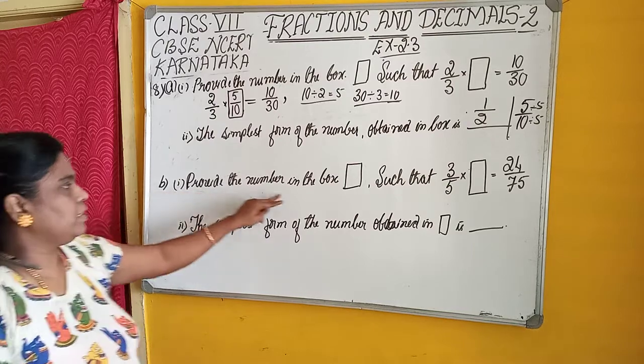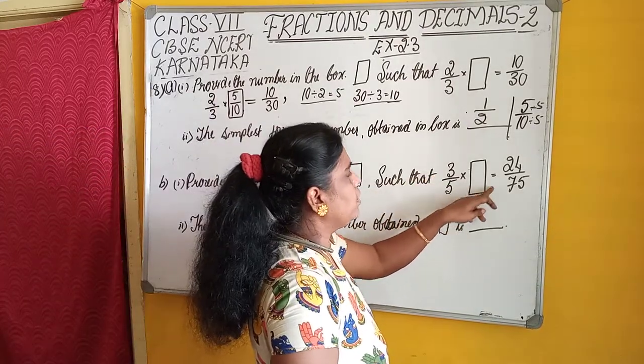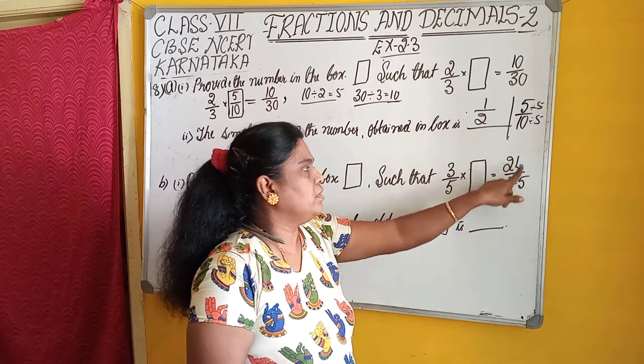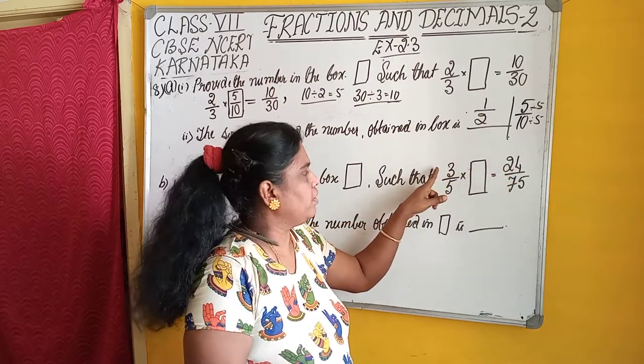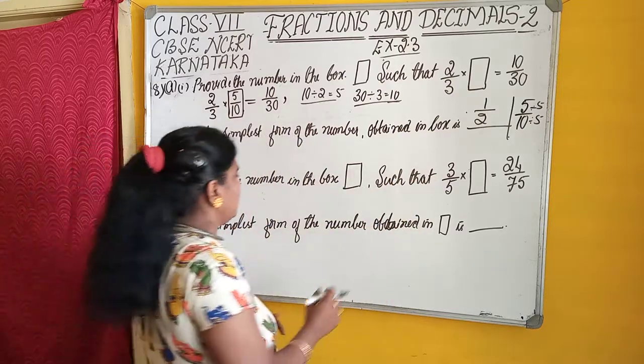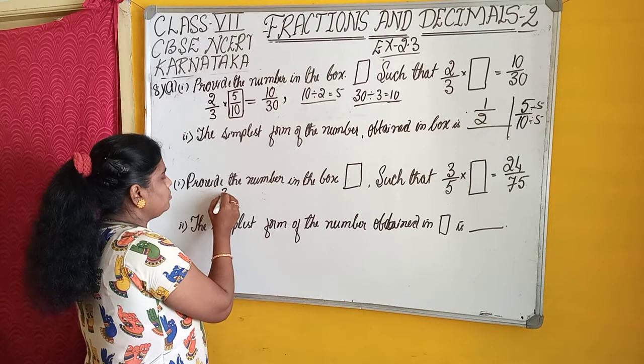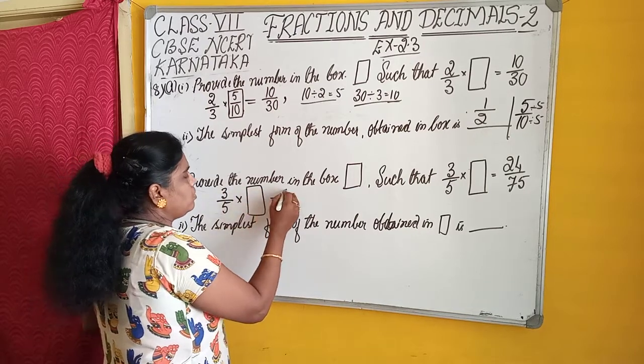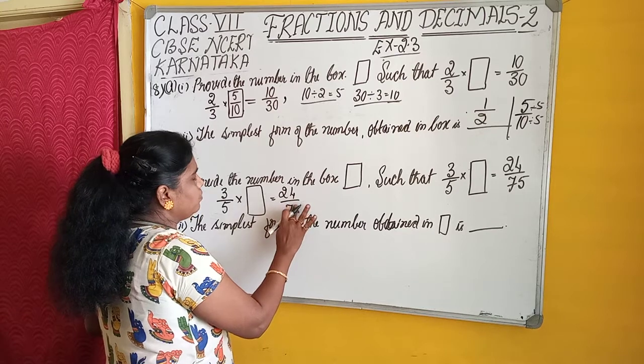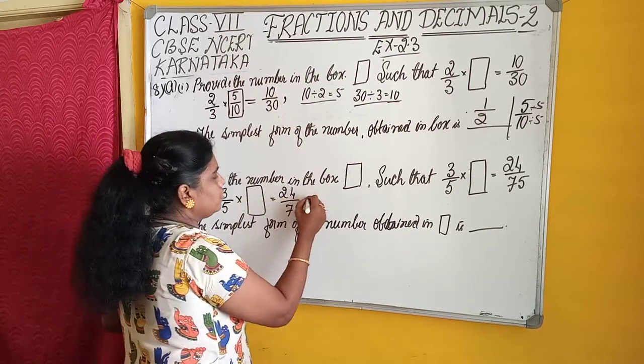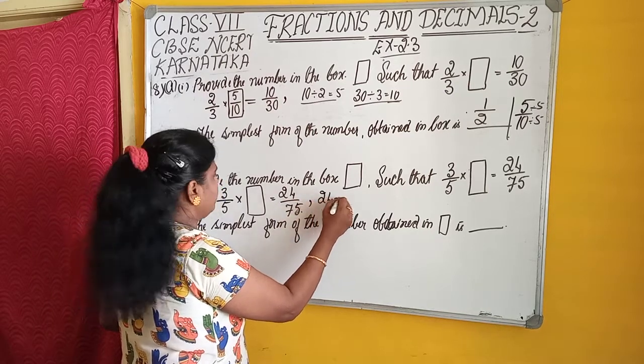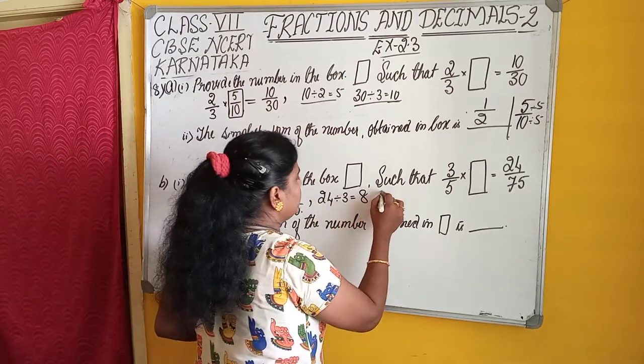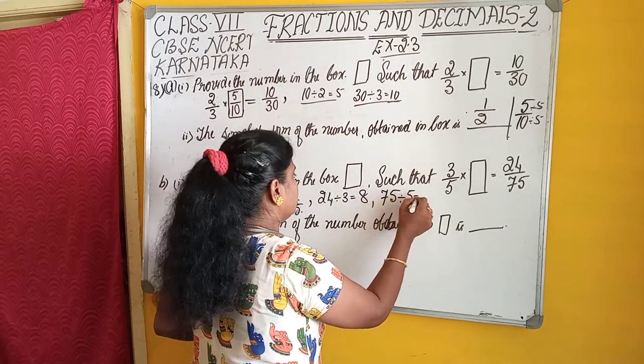Next, provide the number in the box such that 3/5 into that number is 24/75. As I said, to get this number, we have to divide the product by the numerator of that number. That is 3/5 × □ = 24/75. To get the numerator, divide 24 by 3, that equals 8. 75 divided by 5 equals 15.